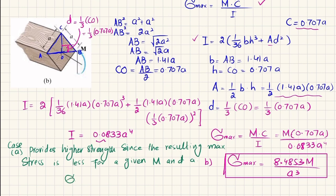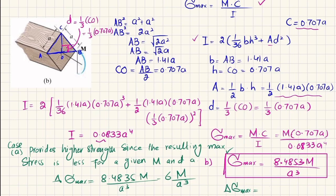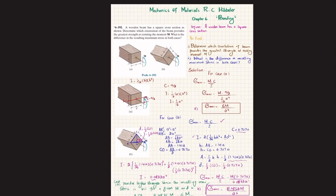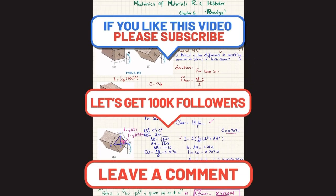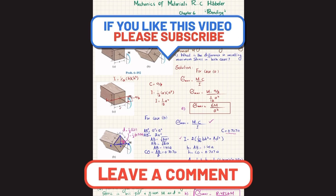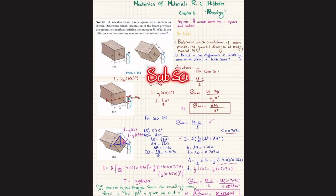Now for the second part — the difference in maximum bending stress between the two cases: 8.4853M/A³ minus 6M/A³ equals 2.49M/A³. This is the answer. I hope you enjoyed this video. That was all about problem 6-192. If you have any questions, ask in the comment section and subscribe to my channel if you're new. Thank you for watching and supporting me.